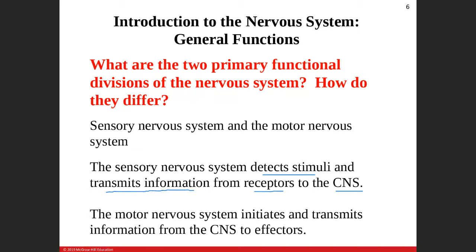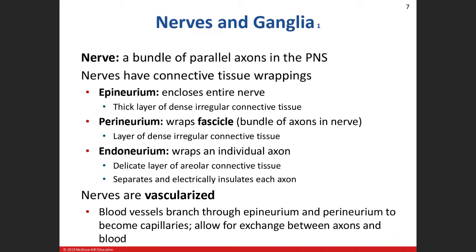The two primary functional divisions of the nervous system are sensory versus motor — they differ in that sensory is input coming in, and motor is output leaving the central nervous system. The sensory nervous system's job is to detect stimuli and transmit that information from the periphery to the central nervous system. The motor then transmits information from the central nervous system to the effectors, carrying information about how you are going to respond to whatever that stimulus is.